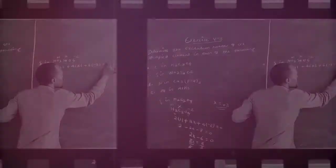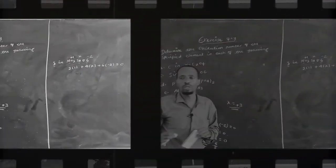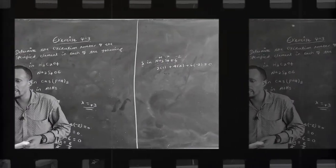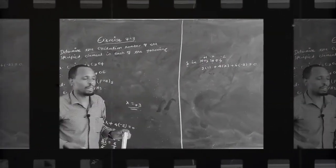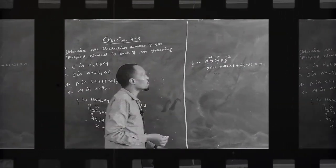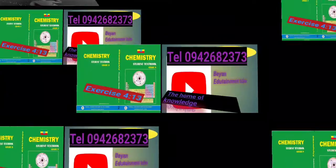The oxidation number of oxygen is minus 2. This must be equal to zero because the sum of the oxidation number of each element in a neutral compound must be zero.